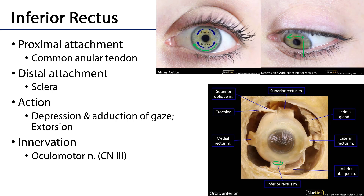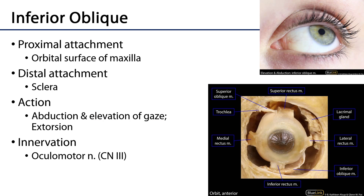Both superior and inferior rectus muscles adduct gaze. Now let's look at the inferior oblique. The inferior oblique muscle takes its proximal attachment from the orbital surface of the maxilla, and its distal attachment is lateral and inferior on the sclera. When it activates, it abducts and elevates gaze — the eye moves outwards and upwards. The inferior oblique is also involved in extorsion.